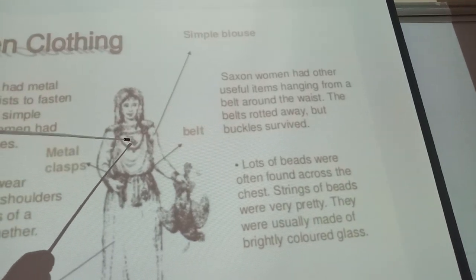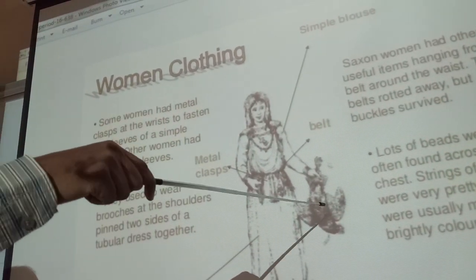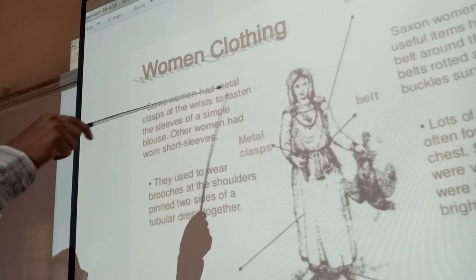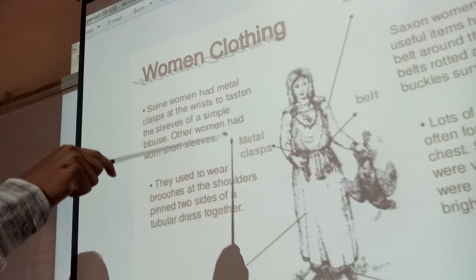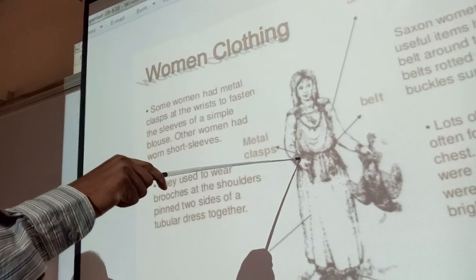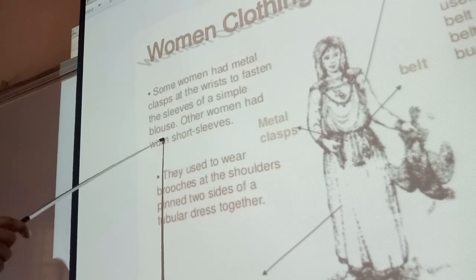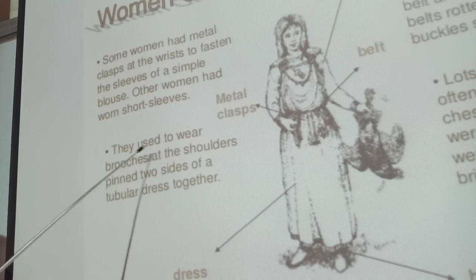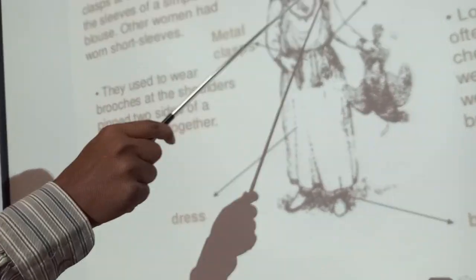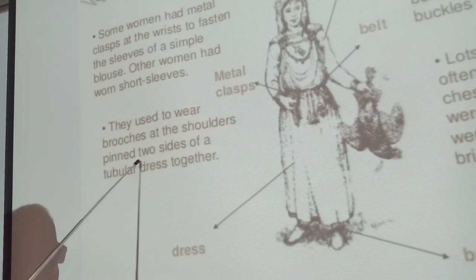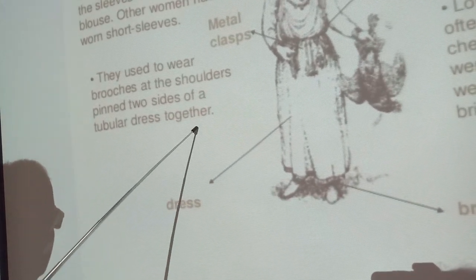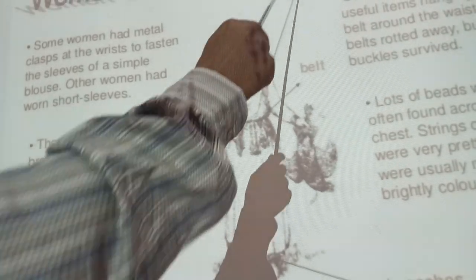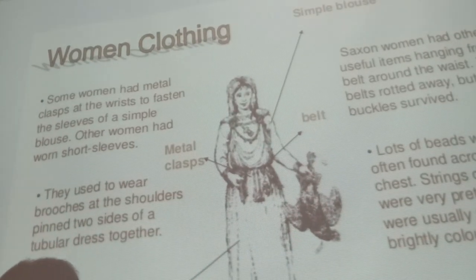Women's clothing: Anglo-Saxon women wore a simple blouse. Some women had metal clips at the wrist, fastened to the sleeves. Other women wore short sleeves. They used to wear brooches at the shoulders to pin two sides of a tubular dress together. Here is the dress: metal clips, belt, simple blouse, and brooches.